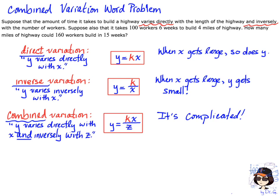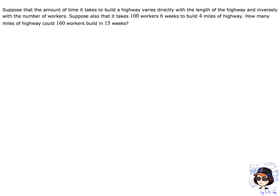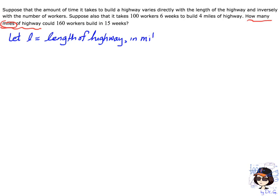The problem we're going to do is a combined variation problem with both inverse and direct variation. The first thing is to define our variables. We're looking for how many miles of highway can be built by 160 workers in 15 weeks. So let L equal the length of highway in miles.